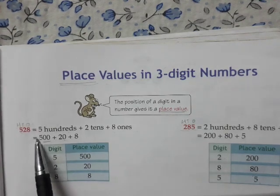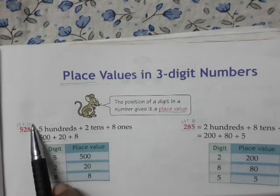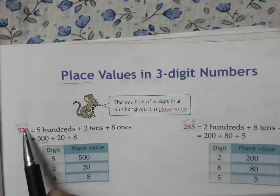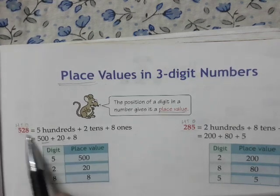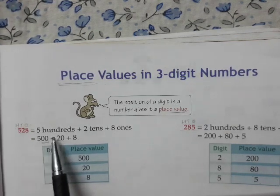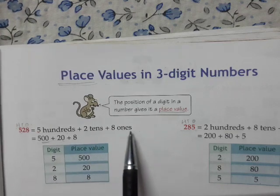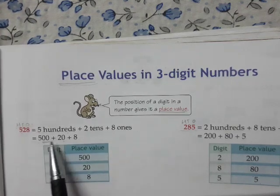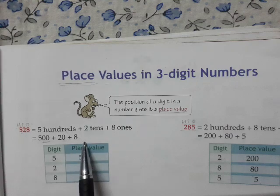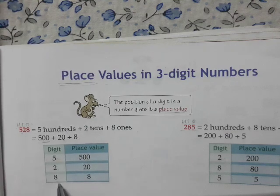Suppose a number is 528. We know 8 is in the place of 1's, 2 is in the place of 10's, and 5 is in the place of 100's. So we can write it as 500 plus 20 plus 8.